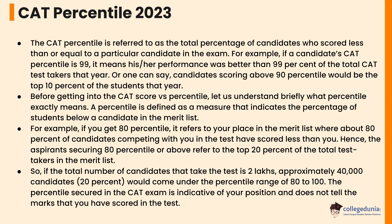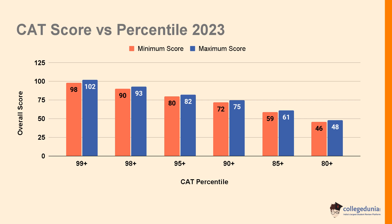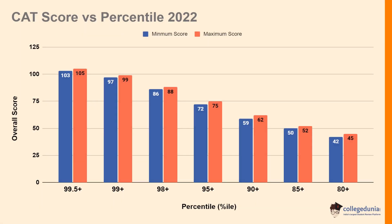Let's check the expected CAT score versus percentile 2023. For the 99+ percentile, the minimum score is 98 and the maximum score is 102. For the 98+ percentile, the minimum score is 90 and the maximum score is 93. For the 95+ percentile, the minimum score is 80 and the maximum score is 82. For the 90+ percentile, the minimum score is 72 and the maximum score is 75.